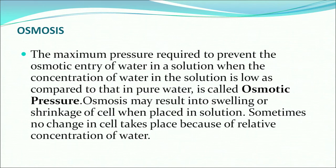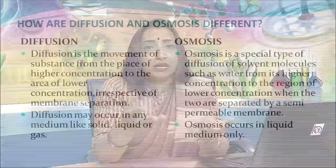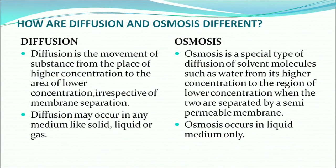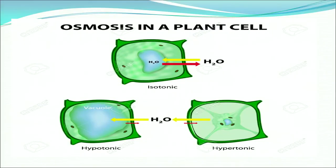Osmosis may result in swelling or shrinkage of a cell when placed in a solution. Sometimes no change in the cell takes place because of relative concentration of water. Diffusion is the movement of a substance from higher concentration to lower concentration. Diffusion can take place in any medium — solids, liquids and gases — but osmosis occurs only in a liquid medium. Another point of difference: osmosis requires a semi-permeable membrane. If the outside solution is more concentrated, osmosis will take place from the cell to the outside.